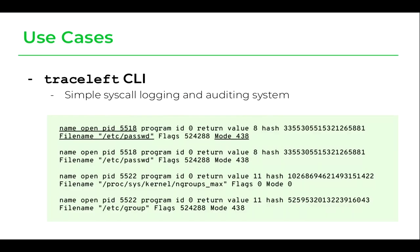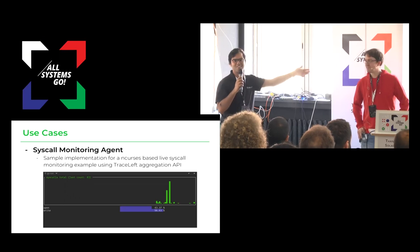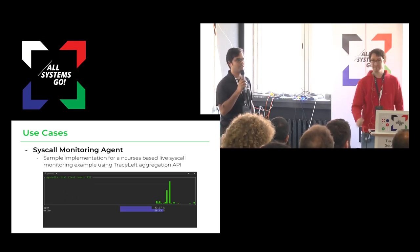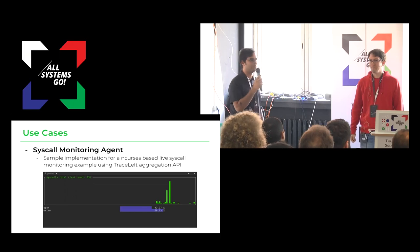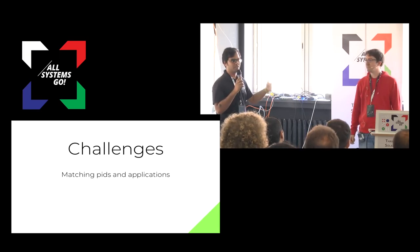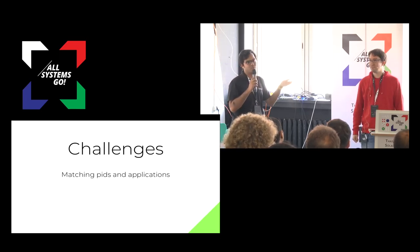There was also a more elaborate internal demo using TraceLeft's aggregator API for a syscall monitoring agent, which produced a nice Ncurses UI for syscall monitoring. Albin continues from here to discuss something very important — the challenges we faced. This section about challenges is more important than TraceLeft itself because it shows what we learned and what else can be done.